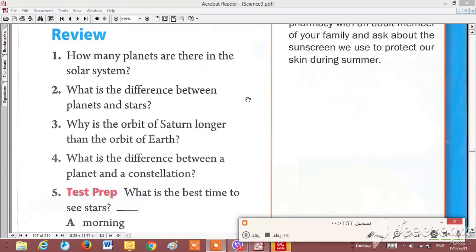How many planets are there in the solar system? We say that we have eight planets. What is the difference between planets and stars? We said a planet is a large body of rock or gas, but stars are hot balls of glowing gases.